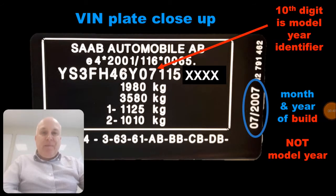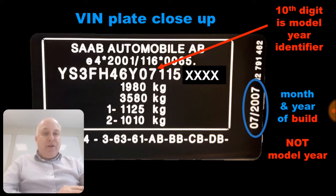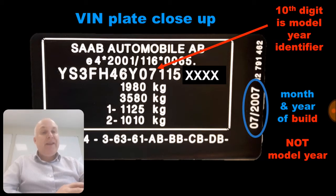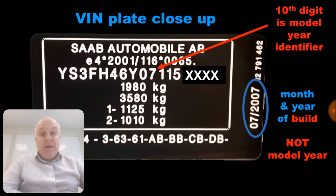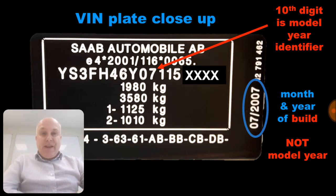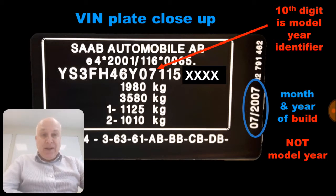Just while we're looking at the VIN plate, over on the right is the month and year the car was built. Note this is not the model year. If you ever need to know the model year of your car, that is the tenth digit of the VIN. Bear in mind that model years follow the UK academic year cycle — so for example, 2007 model year cars were on sale from September 2006 to August 2007. This system is recognized worldwide.